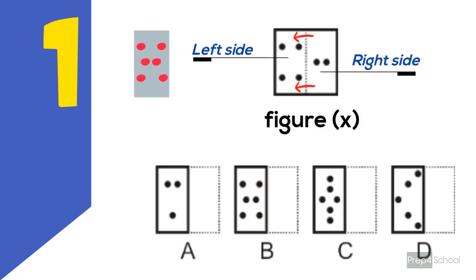Let's check the options. Starting from A, we can say that a dot is missing, hence it is a wrong answer. Next option is B — yes, it's correct, as the right dot comes exactly in between the top and bottom of the left dots. In C and D, the arrangement of dots is changed. So the correct answer is option B.